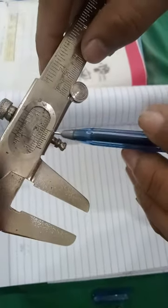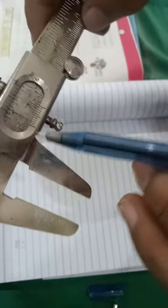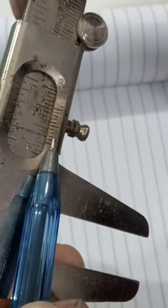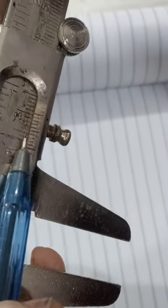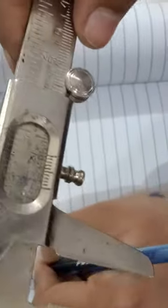Now, we will check which line of the vernier scale is coinciding with the upper scale of our main scale. We can see that the third line of our vernier scale is coinciding with the first line of the upper scale of the main scale. We can write 3 over here.